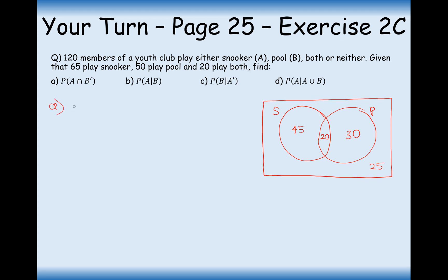Find the probability of A and not B being true — snooker is A, pool is B. A has to happen and B cannot happen. In this case, the 45 people here are those who like playing snooker but don't like playing pool. So these are the 45 people I'm interested in out of a total of 120. The 20 people in the middle like playing snooker but also like playing pool, so I'm interested only in people who don't like playing pool — that's 45 out of 120.